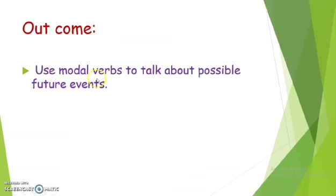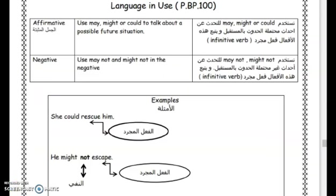Use modal verbs to talk about possible future events. In the previous class, we explained the affirmative and negative forms of modal verbs that we use to talk about possible future situations.